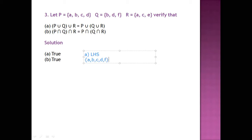So the union of {A, B, C, D, F} with {A, C, E}: because C is repeated both times and A is repeated both times, we will not repeat them in the union.